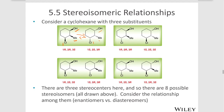In the next box, we have OH coming out, methyl coming out, and chlorine going back. If we swap all of our wedges and dashes, we have OH going back, methyl going back, and chlorine coming out — these two are enantiomers. Similarly, in the bottom left, OH coming out, methyl going back, chlorine coming out; swapping gives OH back, methyl out, chlorine back. In the lower right box, OH coming out, methyl going back, chlorine going back; swapping gives OH going back, methyl out, chlorine back — also enantiomers.